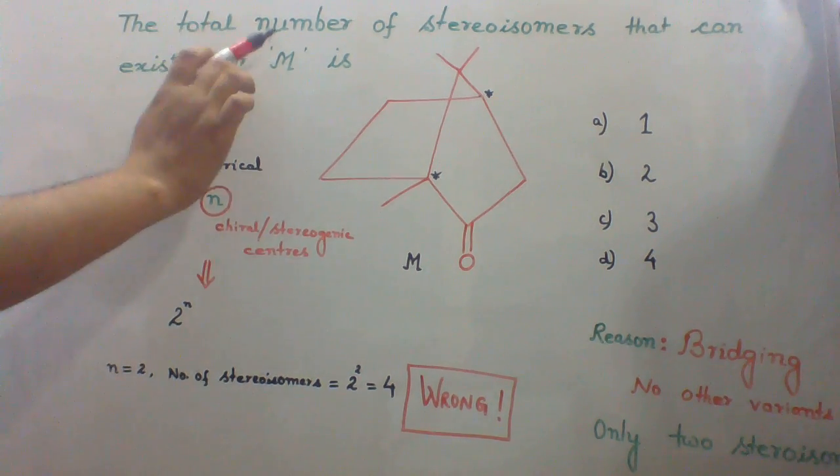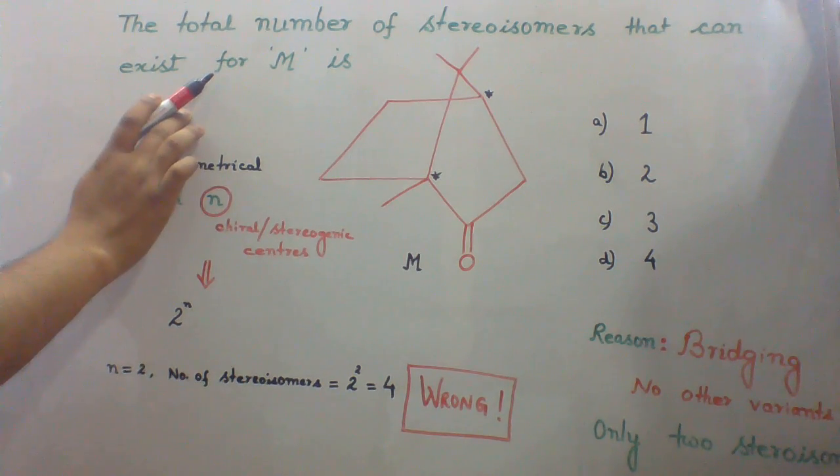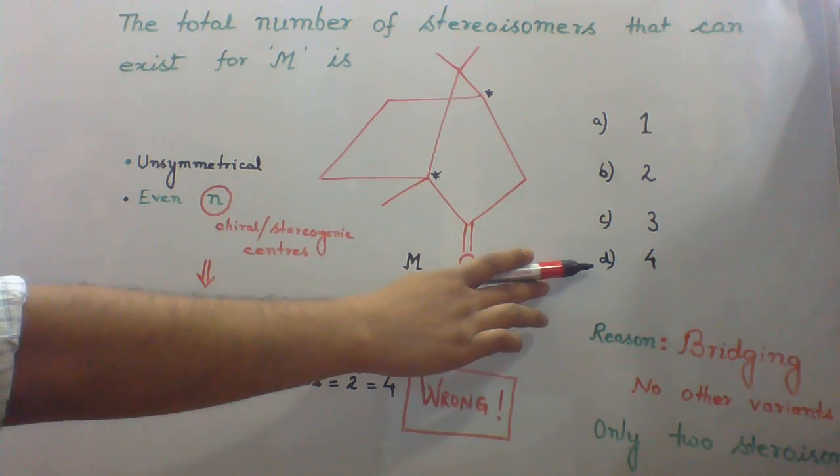The total number of stereoisomers that can exist for molecule M is - four options are given.